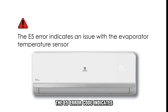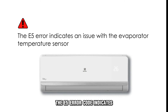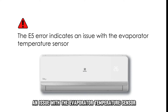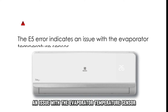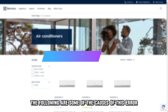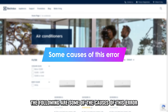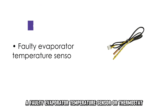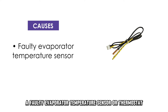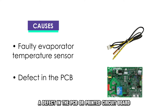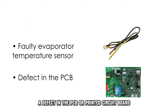The E5 error code indicates an issue with the evaporator temperature sensor. The following are some of the causes of this error: a faulty evaporator temperature sensor or thermostat, or a defect in the PCB, or printed circuit board.